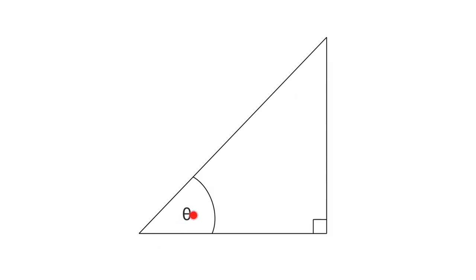You see this little funky Greek symbol here? We call that theta, and in this case, this is my designated angle. So let's walk through how I name these sides based off the fact that this here is my designated angle.